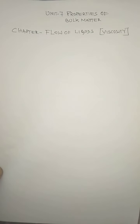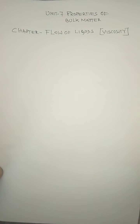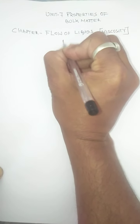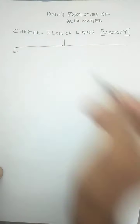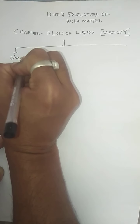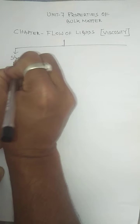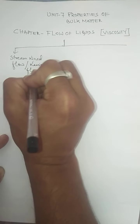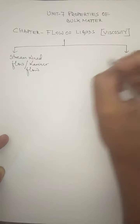To study the flow of liquid in detail, it is completely expressed by the term known as viscosity. Before we come to the definition of viscosity, we try to understand that the flow of liquid occurs on a surface, and there are two types of flow we need to understand. One is called streamline flow, also called laminar flow, and the other is called turbulent flow. The flow of any liquid is basically of these two types.